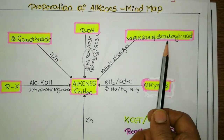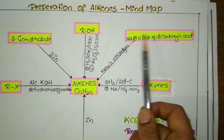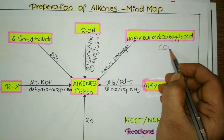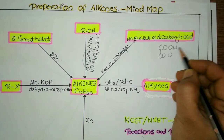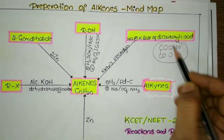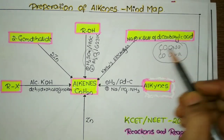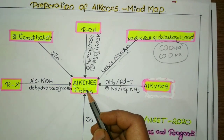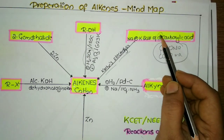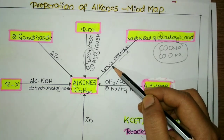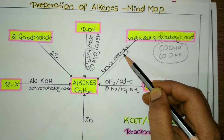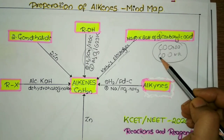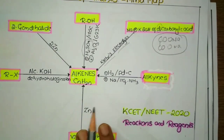The second method uses sodium or potassium salts of a dicarboxylic acid. A dicarboxylic acid has two carboxyl groups. When this dicarboxylic acid undergoes Kolbe's electrolysis, it results in the formation of an alkene. Remember, it must be a dicarboxylic acid — if a monocarboxylic acid undergoes Kolbe's electrolysis, it gives an alkane, as discussed in the previous video.